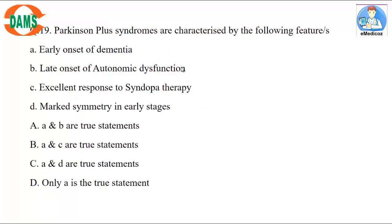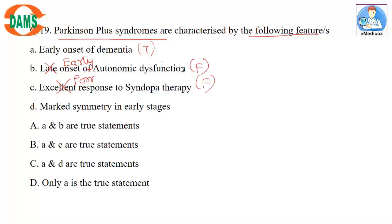Question 19: Parkinson plus syndromes are characterized by the following features. Early onset of dementia — true. Late onset of autonomic dysfunction — no, there is early onset of autonomic dysfunction. Excellent response to syndopa therapy — no, there is poor response. Marked symmetry — true, as asymmetry is a feature of classical Parkinson's, not Parkinson plus. So correct answers are A and D.